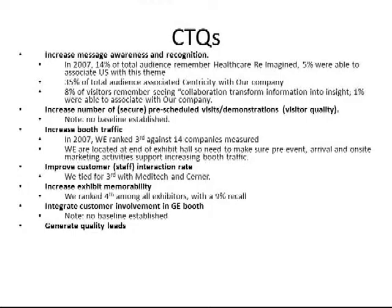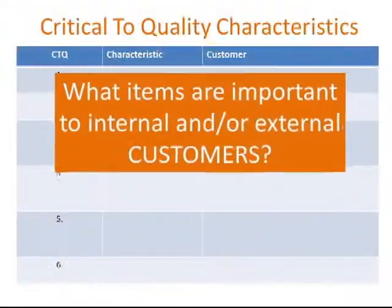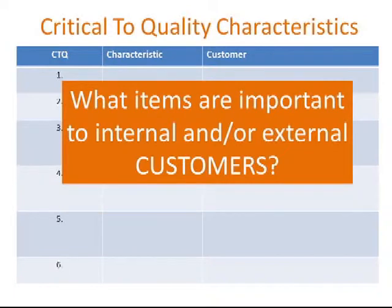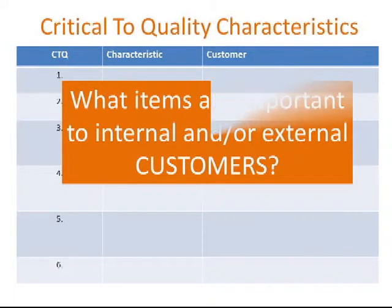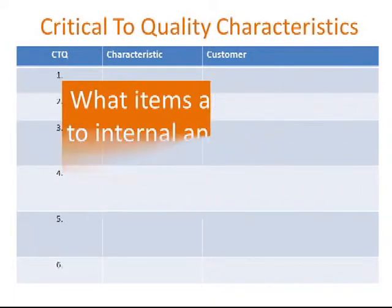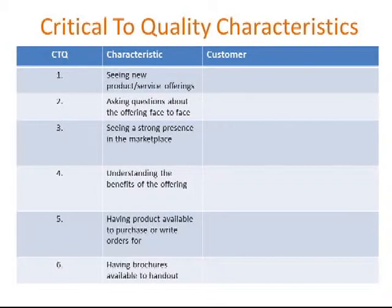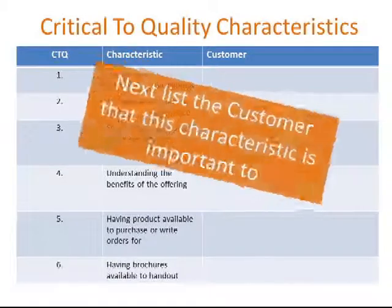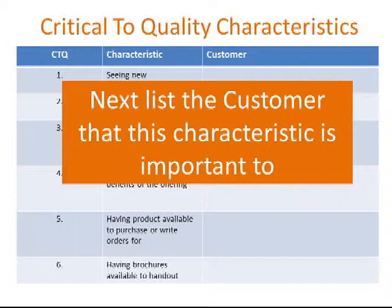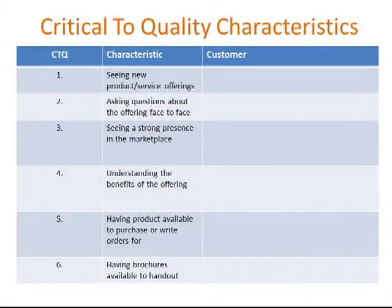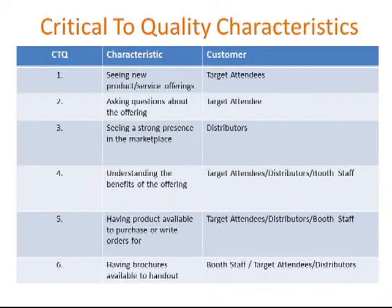To start your critical to quality characteristics documentation, simply write down all the things that are important to your internal and external customers. Put them in a table like the one you see here, and then assign each of those characteristics to specific customers. The CSF and CTQ are foundation stones for the rest of the tools in the DMAIC process. Lean Six Sigma exhibitors will tell you there is no reason to do any activity unless it ties back to a critical to success factor or a critical to quality characteristic.